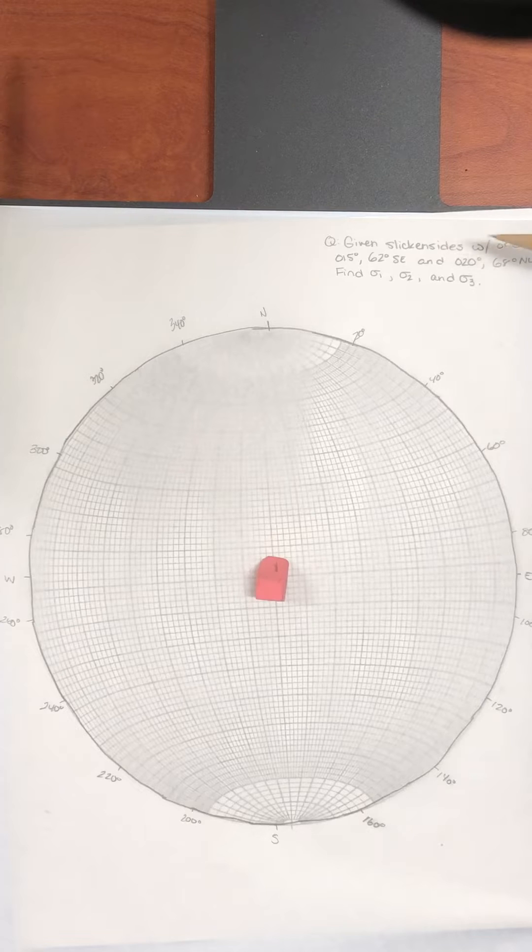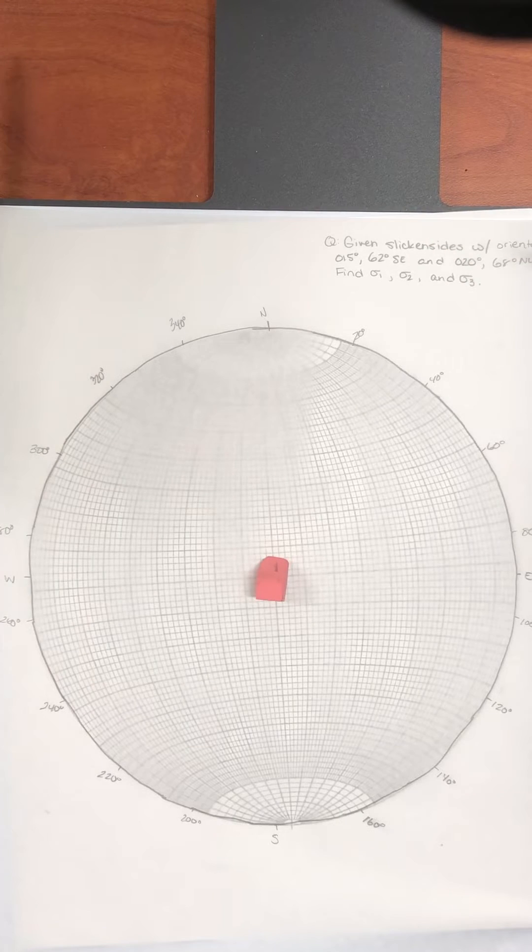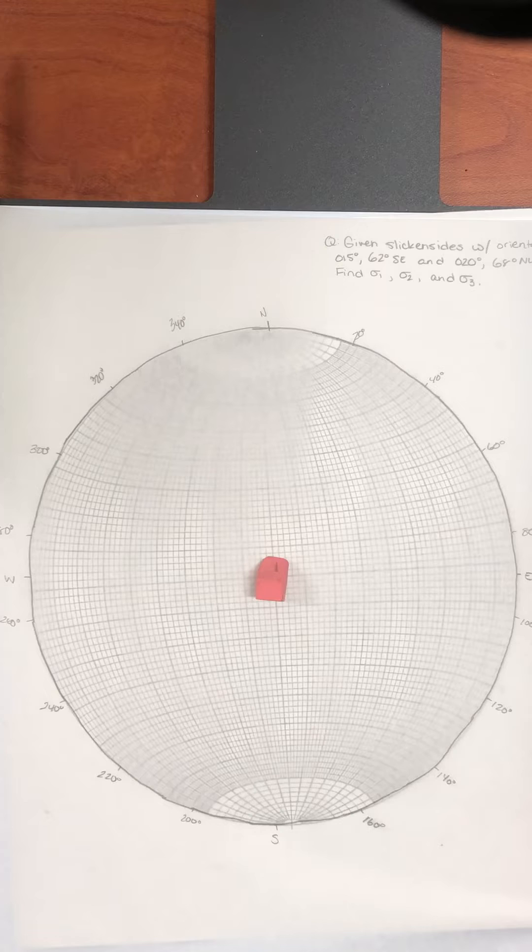So this is the format of a question that you might be given. Given slick insides with orientations 15 degrees 62 degrees southeast and 20 degrees 68 degrees northwest, find sigma 1, sigma 2, and sigma 3.